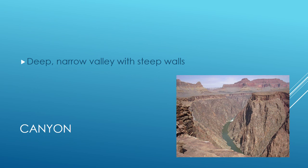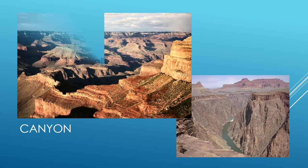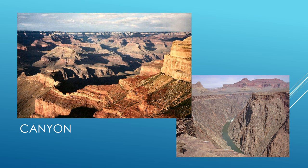Our last word is canyon — a deep, narrow valley with steep walls. Here we see part of the Grand Canyon. There's nothing gentle or sloping about it. The river has eroded away a lot of the sediment and rock, leaving behind steep walls and valleys — that's what makes it a canyon.